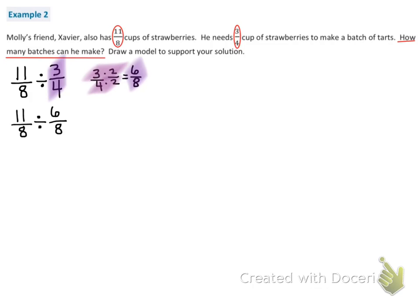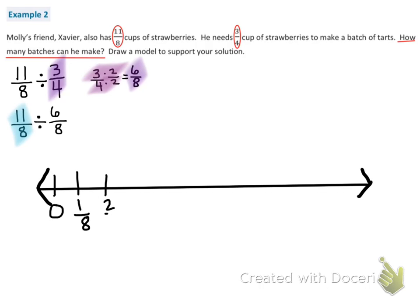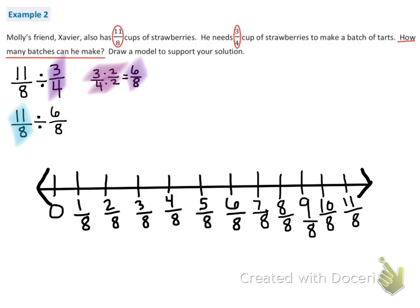Next, I'm going to work with the fraction 11 eighths. And 11 eighths is an improper fraction. I prefer to use a number line when I'm working with improper fractions. So here's my number line. I'm going to go up by eighths from 0 all the way up to 11 eighths. Now I need to ask myself, how many 6 eighths are in 11 eighths?